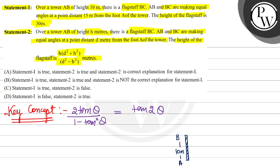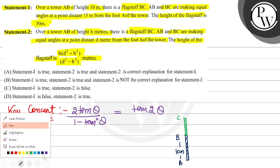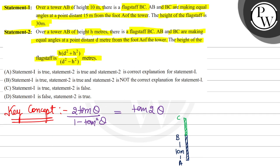The flagstaff is BC. AB and BC make equal angles at a point 15 meters from foot A. This point — let's call it D — so AD is 15 meters.